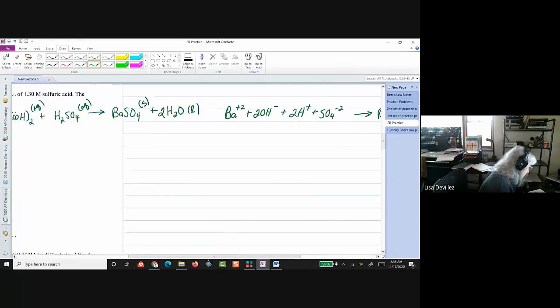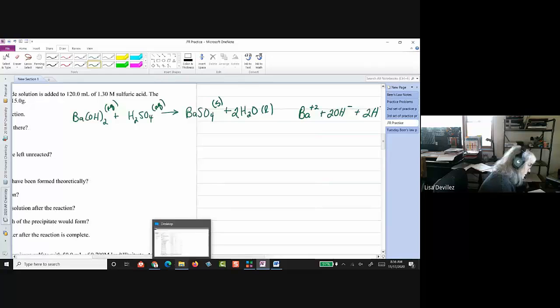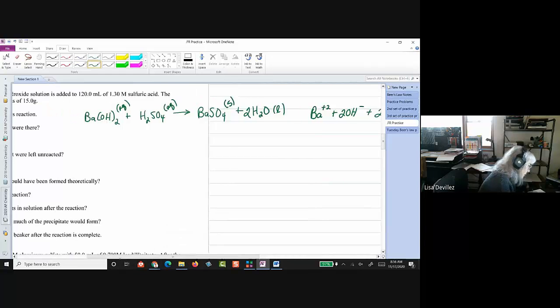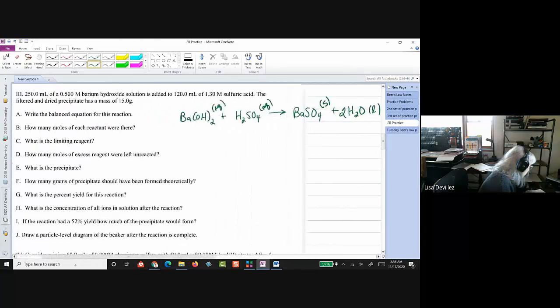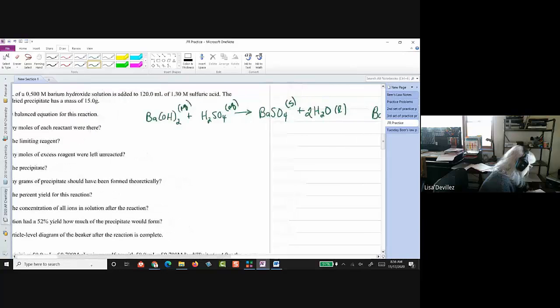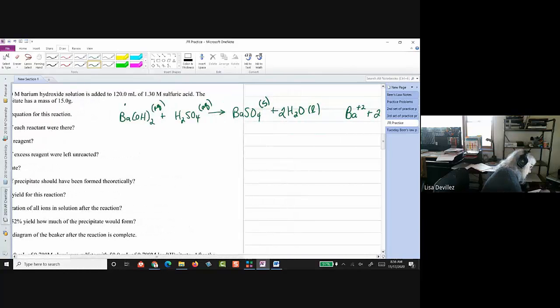So, let's look at the amounts. Okay. So, we've got 250 milliliters of 0.5 molarity. So, 0.25 liters of 0.5 molar. And I have 120. So, 0.12 liters of 1.3 molarity.